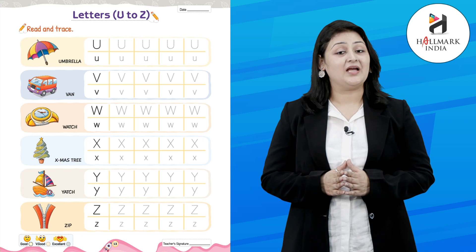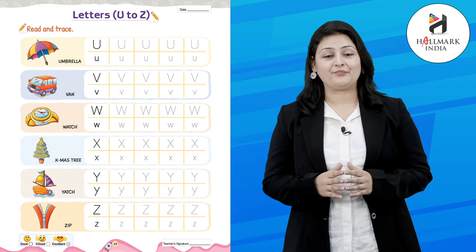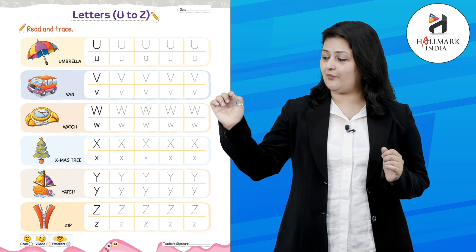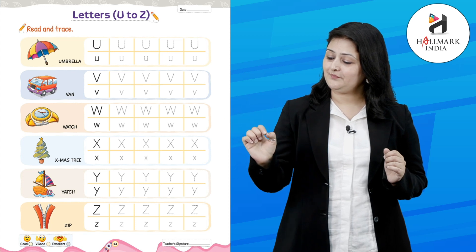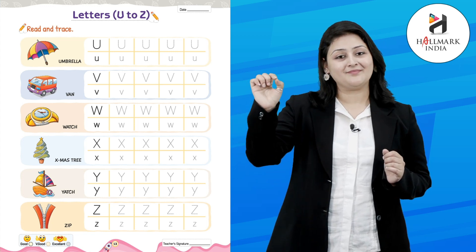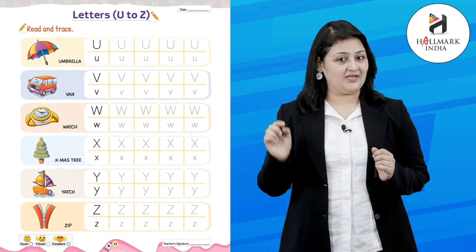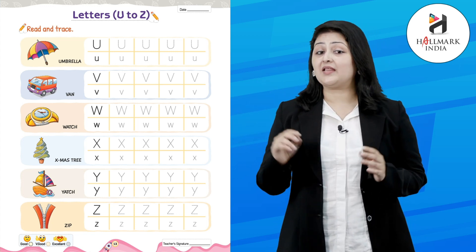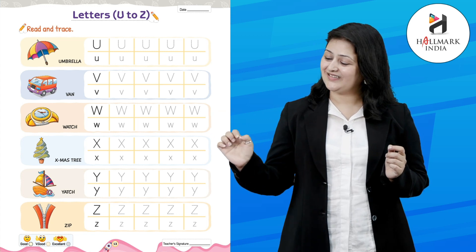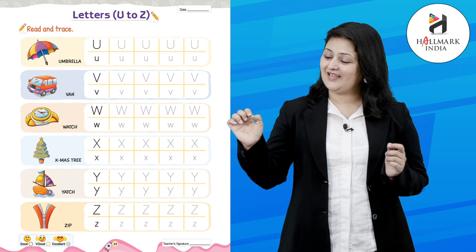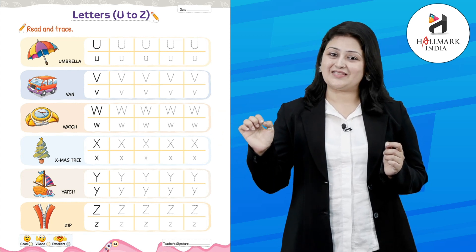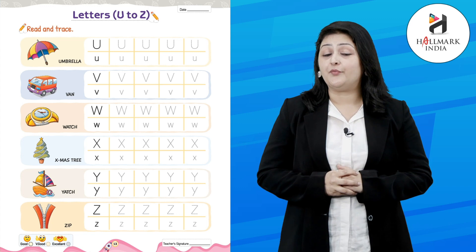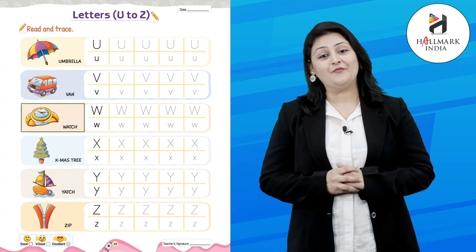Now the next alphabet is W. We need to trace the capital W like this. That makes the capital W. And the small W like this. That makes the small W. W for whale.